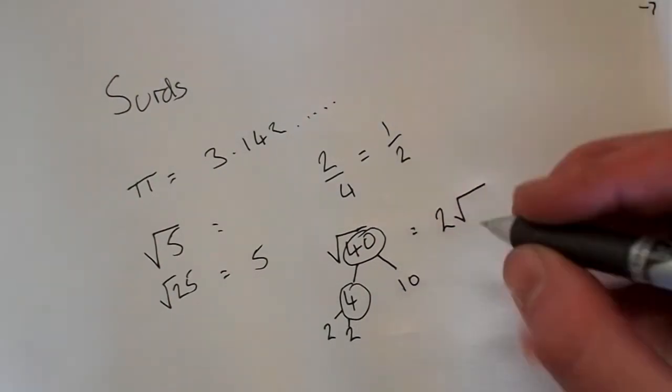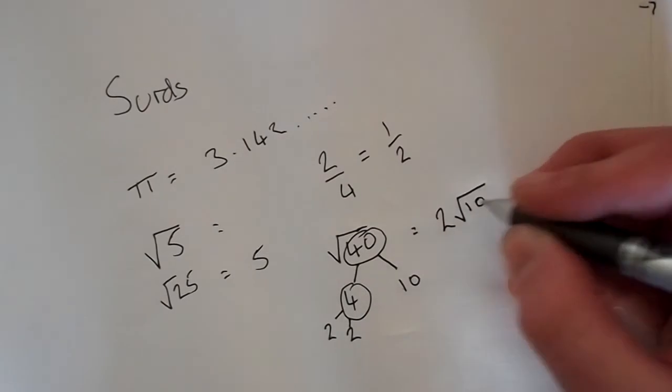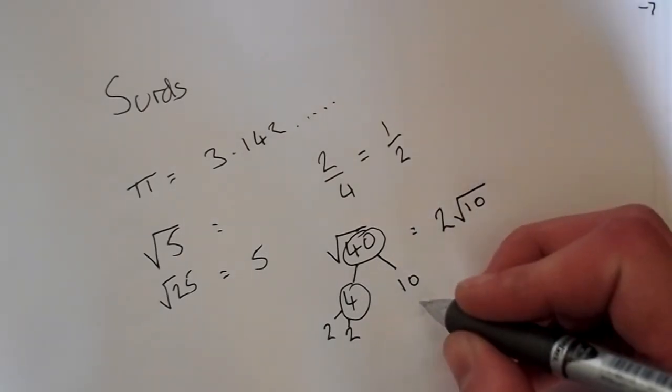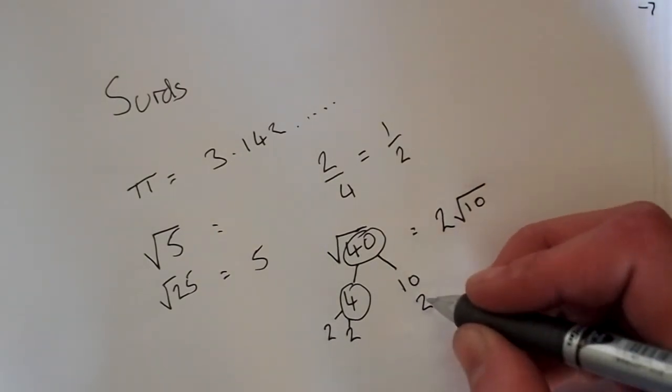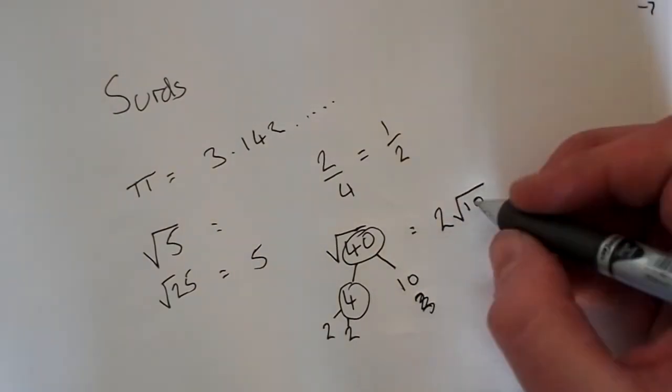So we only have 10 left, so we're going to write 10 in here. But say we had some more numbers. Say for example, if we had 2, we would multiply this out to be 20.